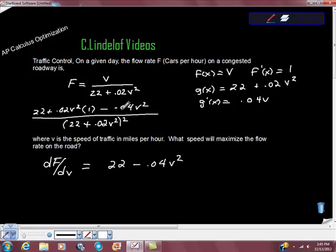Hopefully you can see where I've taken that from. I get .04 V squared here and get positive .02 of them here, so that should give me—a little bit of math would be better, so that's a 2 right there. All over 22 plus .02 V squared quantity squared.